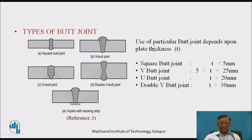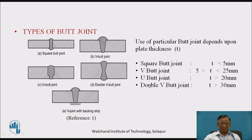The application of these joints depends upon the plate thickness. Square butt joint is used when the thickness is less than 5 mm, V butt joint is used when the thickness is between 5 to 25 mm, U butt joint is used when thickness is greater than 20 mm, and double V butt joint is used when thickness is greater than 30 mm. V butt joints are commonly used for pressure vessels as they are more reliable.